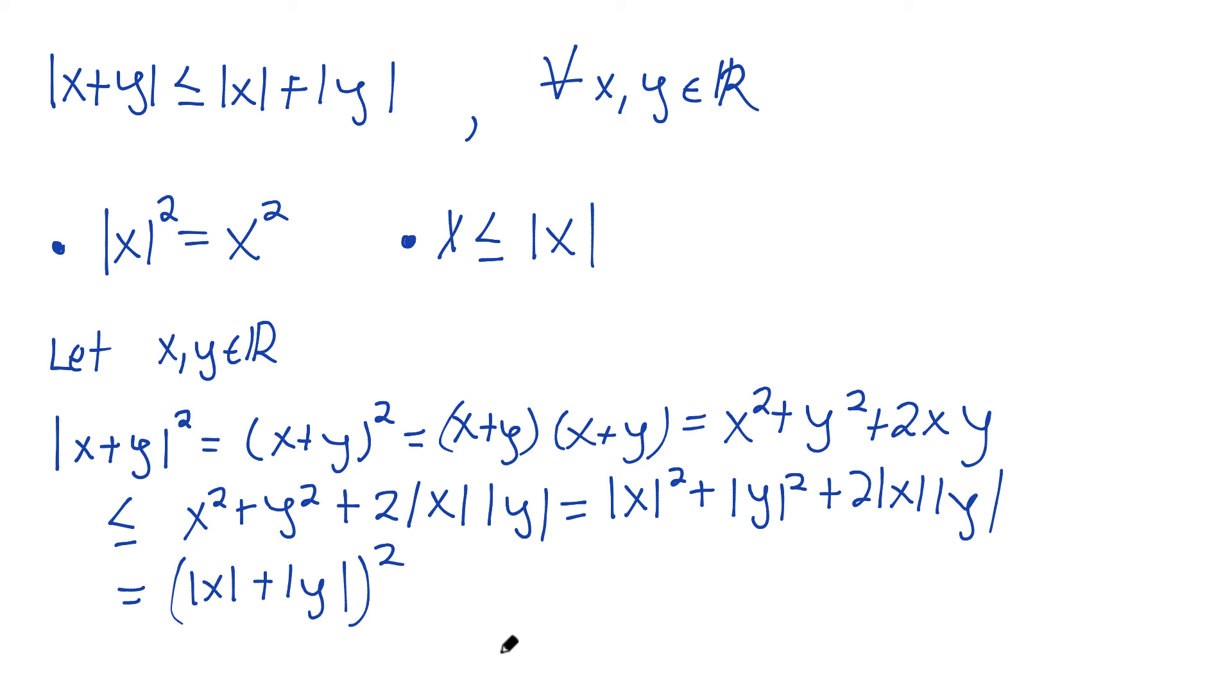Why have I done this? Just look at the first and last line. I've got |x + y|² less than or equal to (|x| + |y|)². In other words, you can just take away the middle stuff, remove that, and just say |x + y|² is less than or equal to (|x| + |y|)².